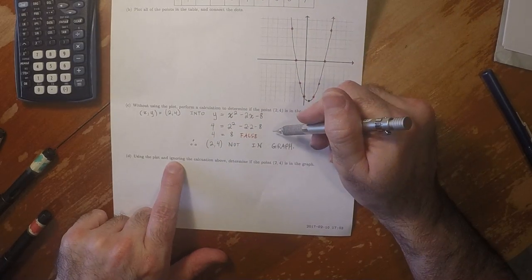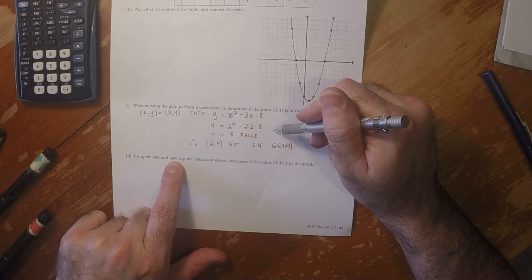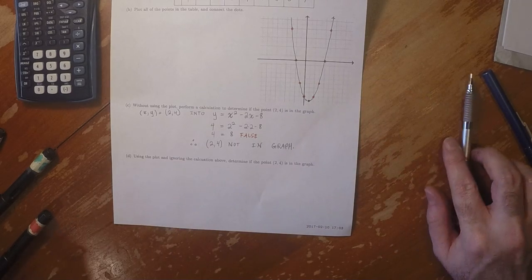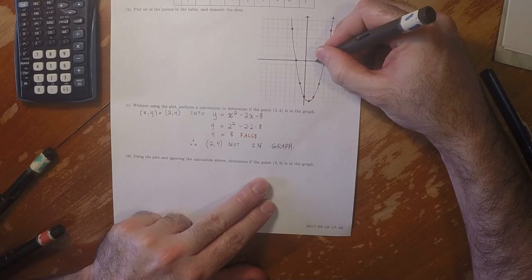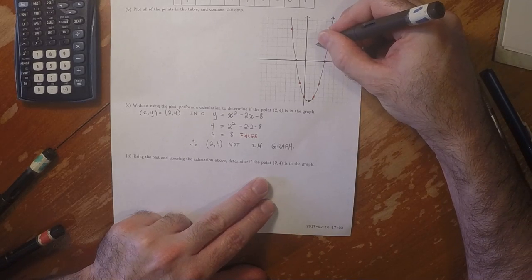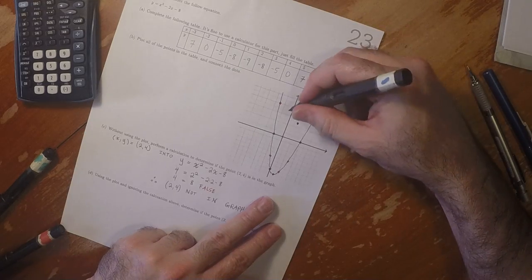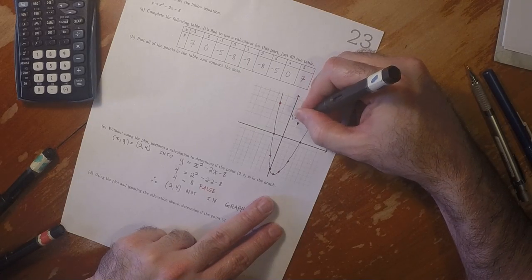Using the plot and ignoring the calculation, determine if (2, 4) is in the graph. Well, let's plot the point (2, 4). So that is the point (2, 4).